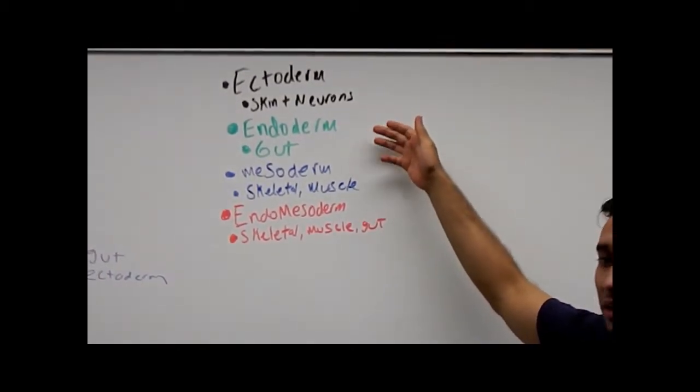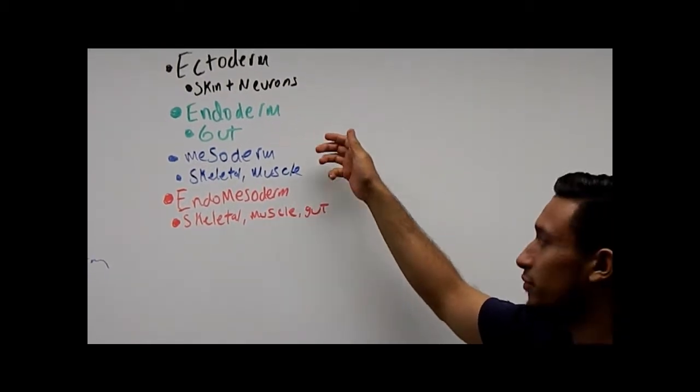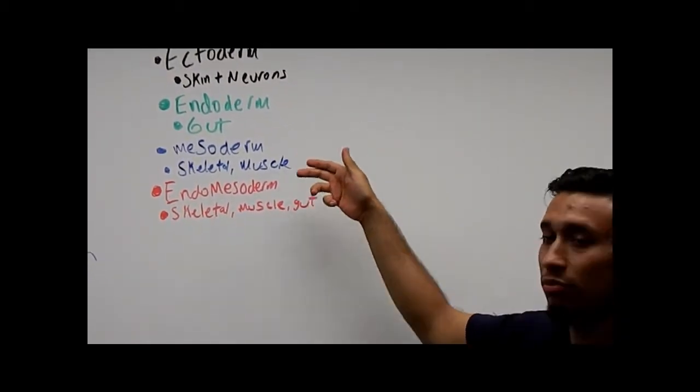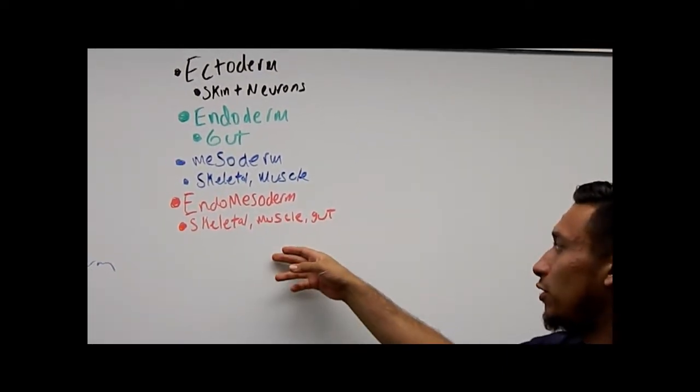First, we got the ectoderm, which means the skin and their neurons. Second, we got the endoderm, which means the gut. Then we got the mesoderm, which means skeletal and muscle. Last, we got endomesoderm, which means the skeletal and muscle.